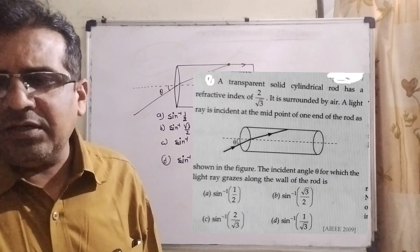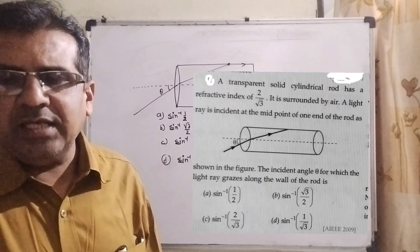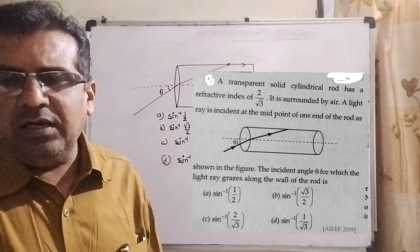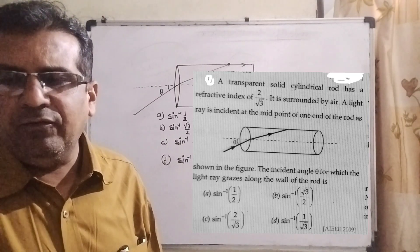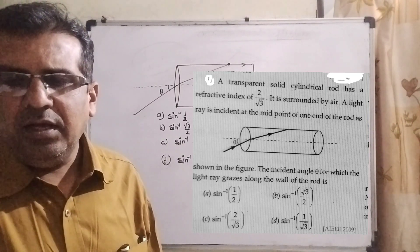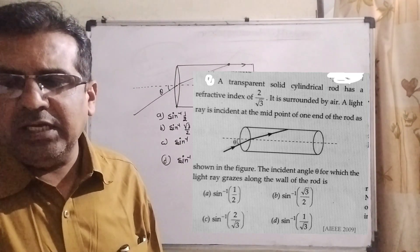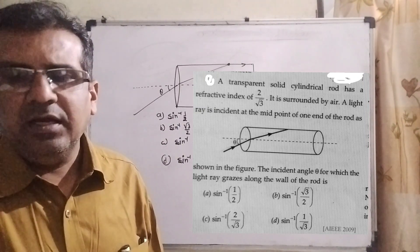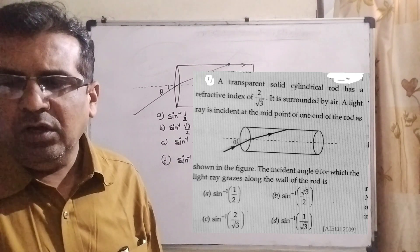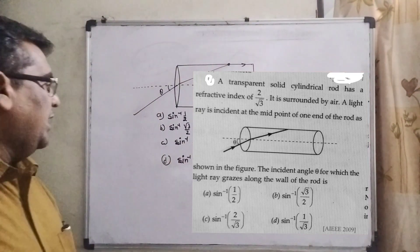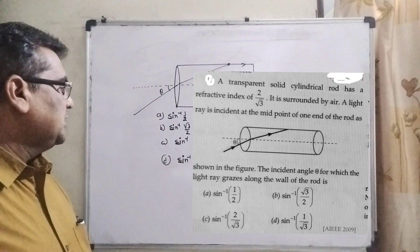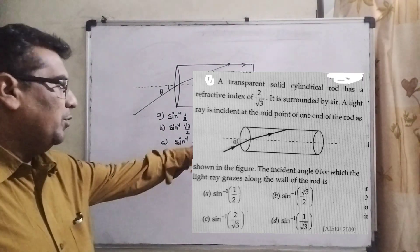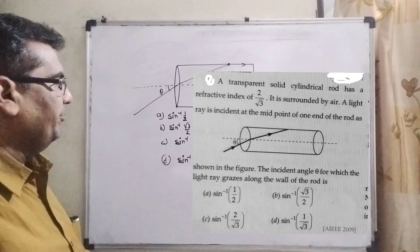Question 1: A transparent solid cylindrical rod has a refractive index of 2/√3. It is surrounded by air. A light ray is incident at the midpoint of one end of the rod as shown in the figure. The incident angle theta at which the light ray grazes along the wall of the rod is: (A) sin⁻¹(1/2), (B) sin⁻¹(√3/2), (C) sin⁻¹(2/√3), (D) sin⁻¹(1/√3).